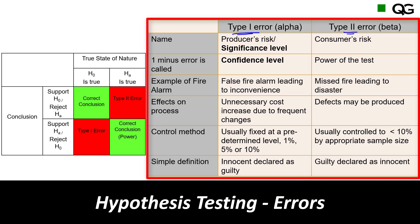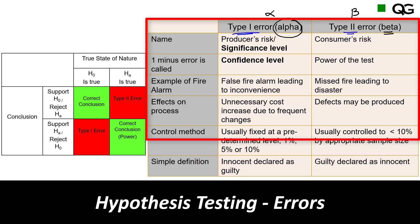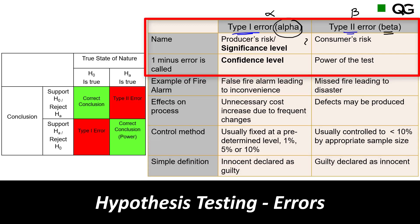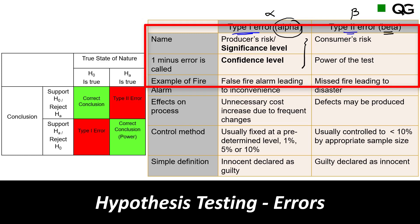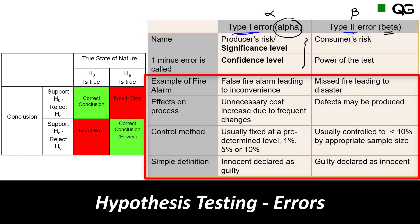Type 1 error is also called alpha, shown by the sign α. Type 2 error is also called beta, shown by the symbol β — like a 'b' with a longer tail. Let's skip the first two lines in the table for now and come back to them in the next slide.